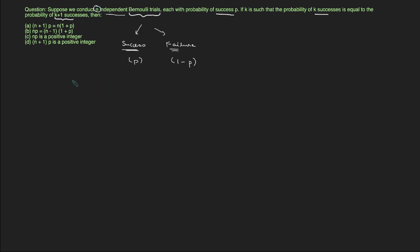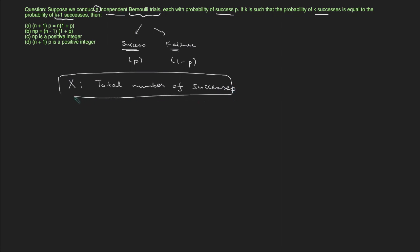Given this scenario, I can define a random variable X — note that this is capital X because this is the notation of a random variable. X is the total number of successes in these N trials. Given this information, we know that X will follow a binomial distribution with parameters N and P, where N is the number of trials and P is the probability of success.